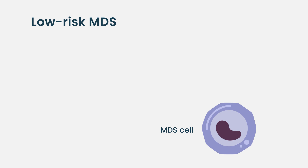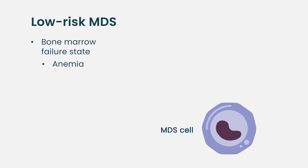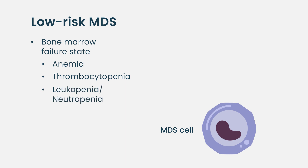In terms of explaining it, I tend to think of MDS as two different diseases. Patients with a lower-risk MDS have what we call a bone marrow failure state, where their main issue is having a low red blood cell count — so anemia — or a low platelet count, thrombocytopenia, or a low white blood cell count, leukopenia or neutropenia. In those cases, there is a low risk of transformation to acute myeloid leukemia.